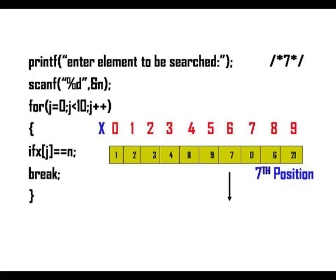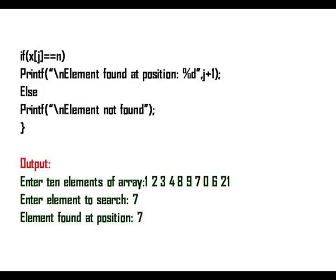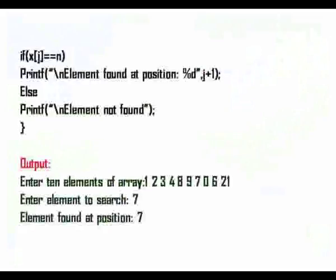But inside the computer memory it is stored from 0. Because if I give 6, it may confuse the user. I am just incrementing it by 1 and I am saying position 7. j plus 1. Though it is found in the 6th position, when it is being displayed, it will display it as a 7th position which will be easy for the user to understand.